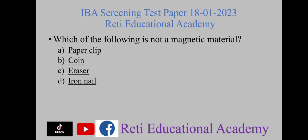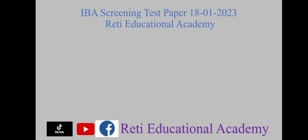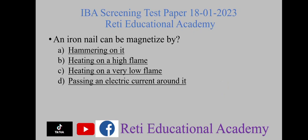Which of the following is not a magnetic material? A) paperclip, B) coin, C) eraser, D) iron nail. The right option is C) eraser.